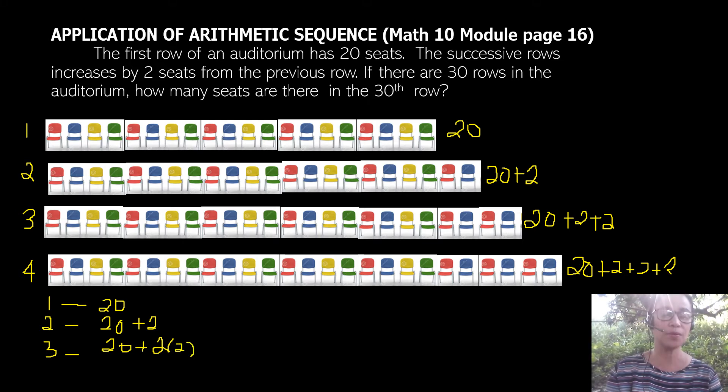And then our fourth row has 20 plus 2. Then again, we make a shortcut - instead of 2 plus 2 plus 2, that becomes 2 multiplied by 3.